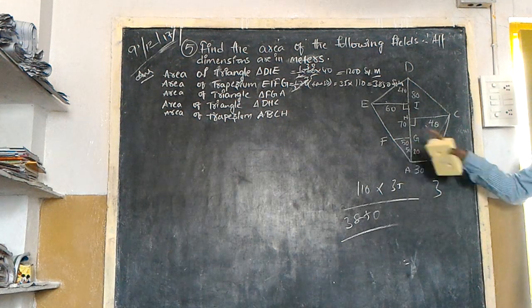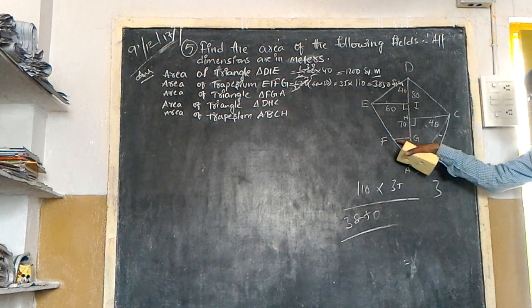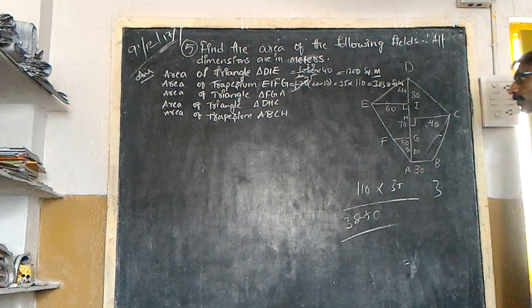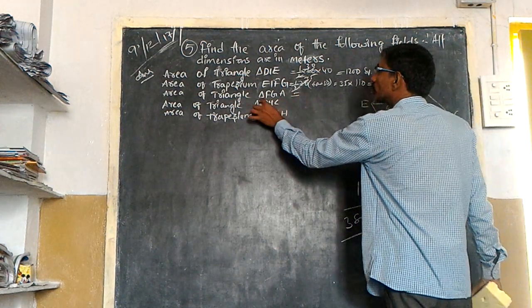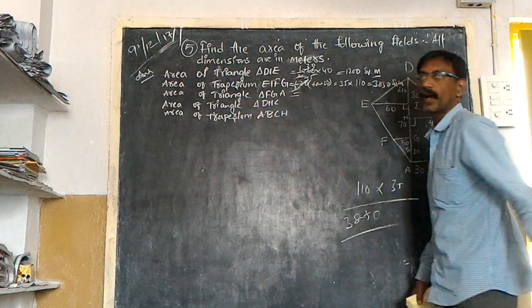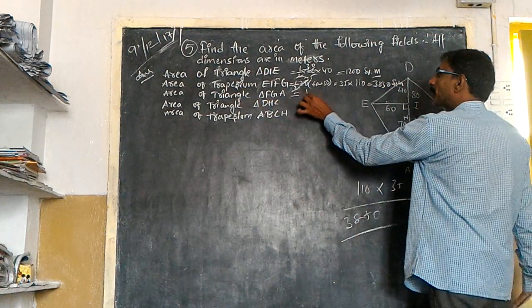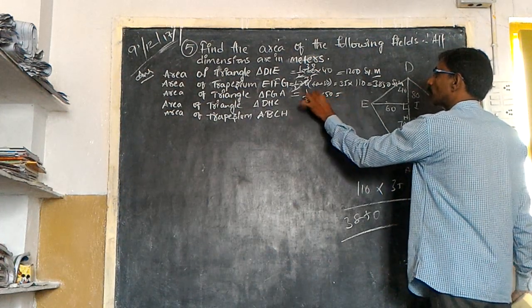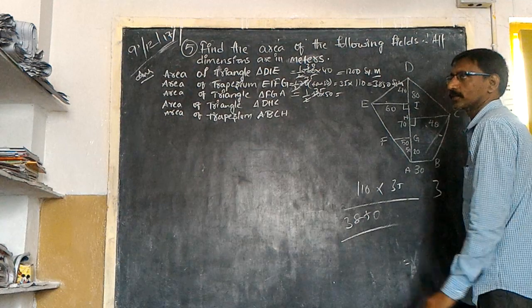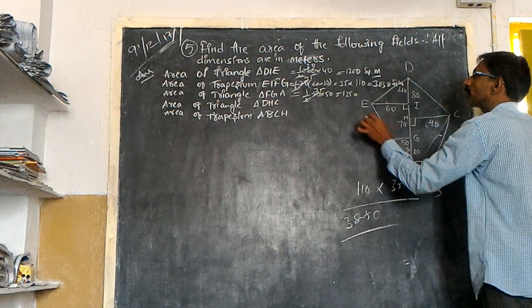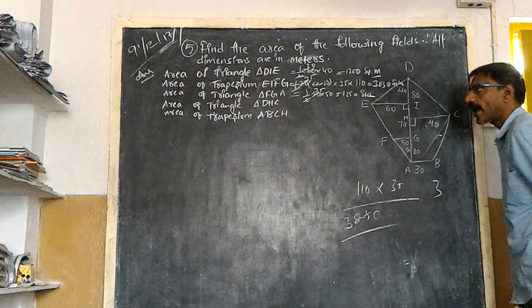The very next one, this is also triangle. This is my base 50 and this is my height 50. Both are given 50. Area of triangle, half base into height. 50 into 50. That is equal to 25 times. 25 fives are 125. You have to keep one zero. 1250 square meters.